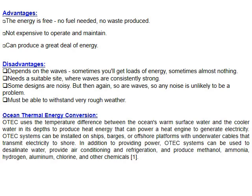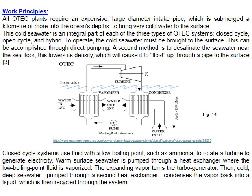OTEC — Ocean Thermal Energy Converter — exploits the temperature difference between warm surface water (around 20–22°C) and cold deep ocean water (around 5°C). We use this temperature gradient: warm surface water evaporates a working fluid, and cold deep water condenses it back, driving a turbo-generator cycle.